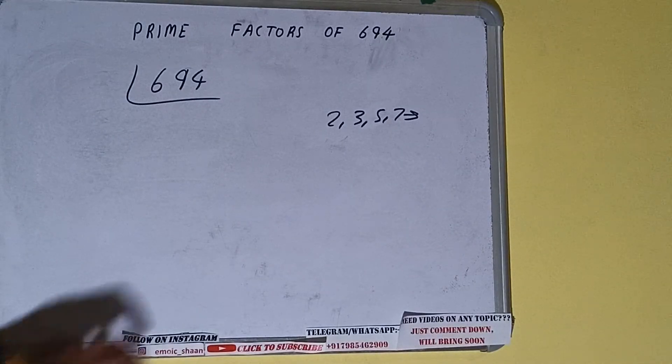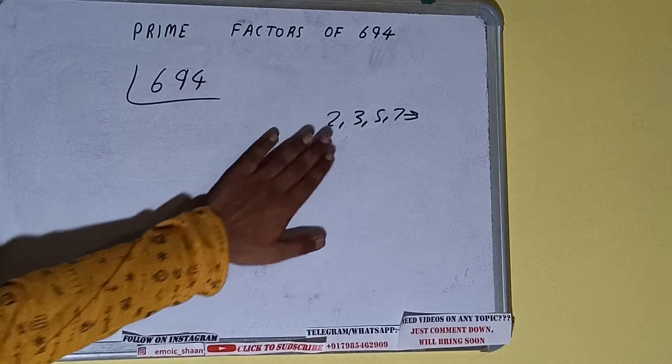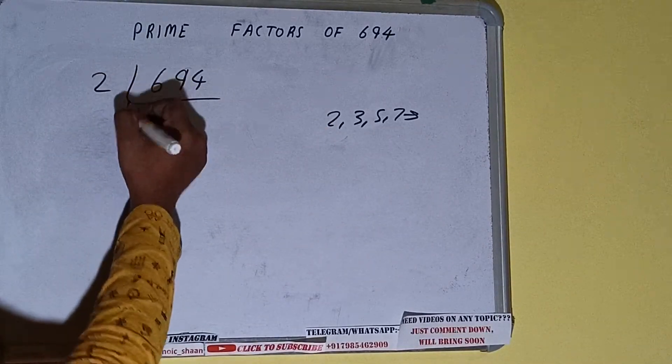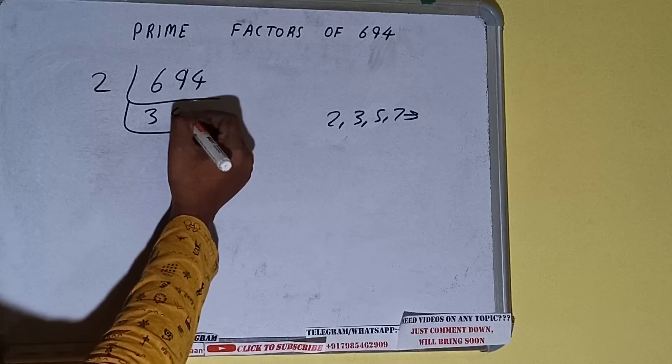So we'll check with the lowest prime number we have, that is 2. Is the number 694 divisible by 2? Yes, it is because the number is even, and we'll be having 347.